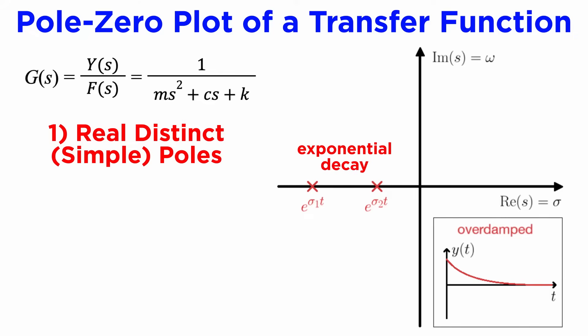This system will be stable if both poles are in the left half plane, meaning they have real parts that are less than zero, so that all exponential terms are decay terms rather than growth terms, so the output eventually falls to zero as time goes to infinity.